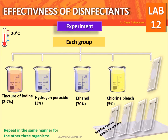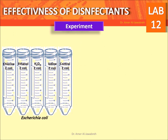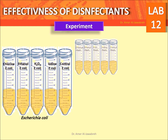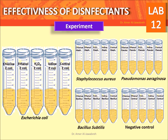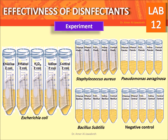Repeat in the same manner for the other three organisms. Prepare 25 falcon tubes (50 ml). Aseptically add 20 ml of TSB to each. Put the 25 tubes into five sets and label them showing the disinfectant or antiseptic treatment and organism tested as shown. Then immerse the smears into the corresponding tubes.